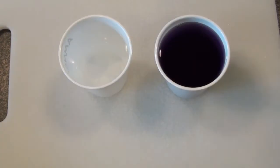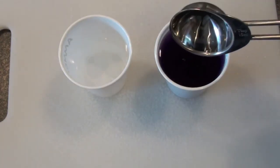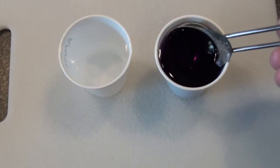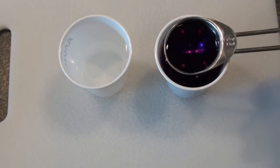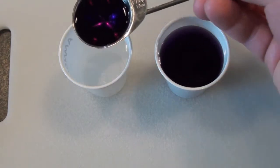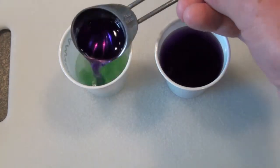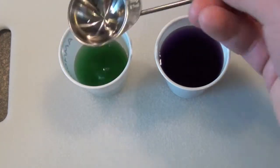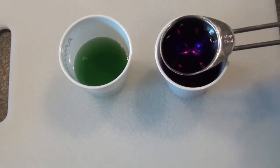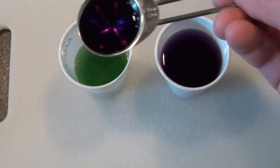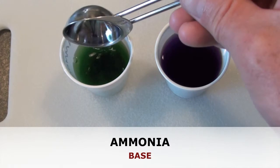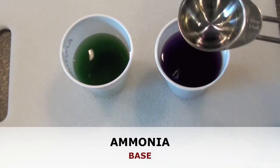Our next test item is ammonia. When cabbage indicator solution is added to ammonia it immediately turns bright green. This is evidence that ammonia is a strong base.